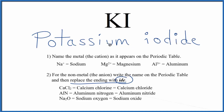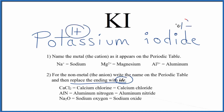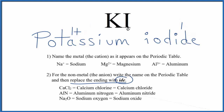If you were asked to write the formula, you need to recognize that potassium is in group 1 on the periodic table, so it has a 1+ ionic charge when it bonds. Iodine has a 1− ionic charge. Since 1+ and 1− cancel out, we only need one potassium and one iodine atom for potassium iodide. This is Dr. B, and thanks for watching.